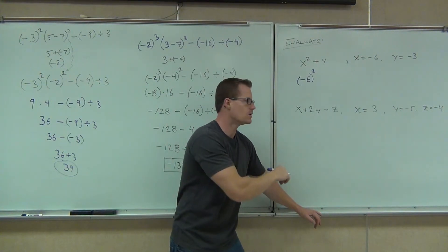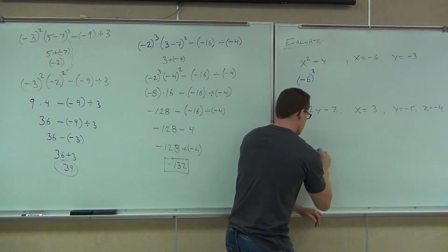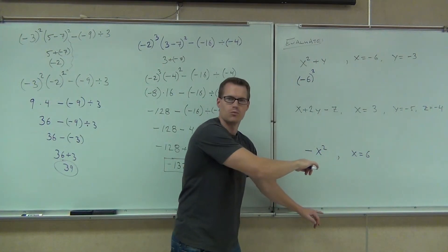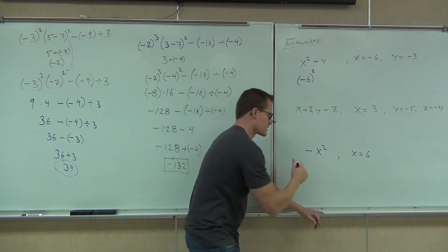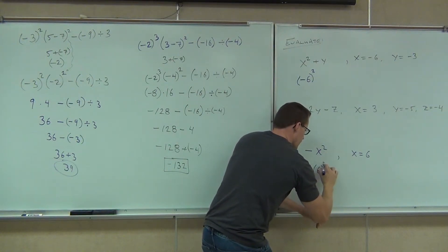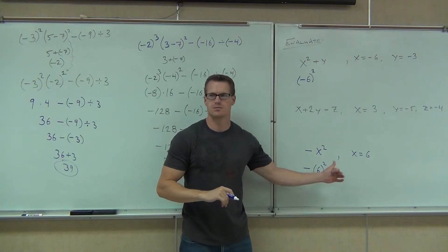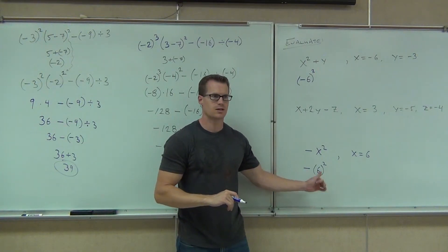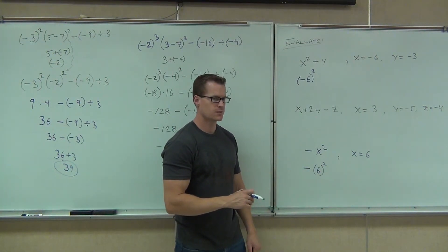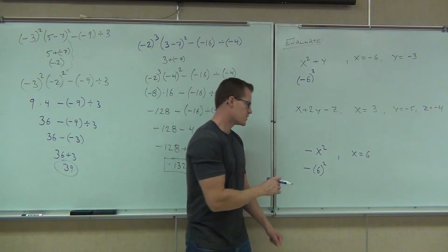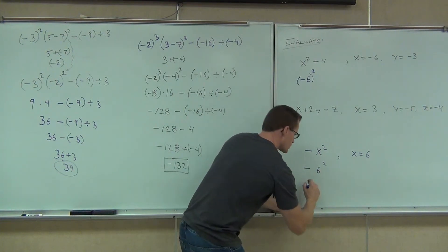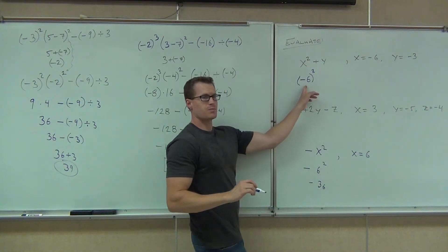That would be different than this — watch very carefully. I'm going to change your problem. If this had been your problem instead, what this means is negative, and then you plug in 6 there. Notice how the negative is not being taken with that 6. Do you see the difference? So this would be negative 36, while the other one — because of the exponent — would be positive 36.